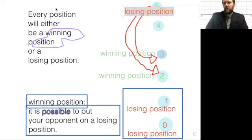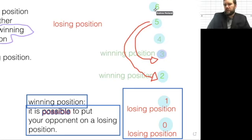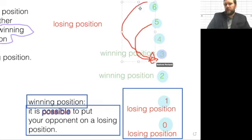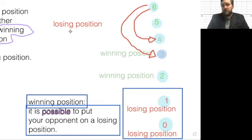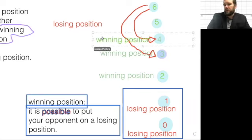Now for the same reason, six is also a losing position. If I look at six, what are my choices? Possible things I could do are I could move from six to three, or I could move from six to four. I'm going to say six is a losing position because no matter what I do, my opponent has a way to beat me.